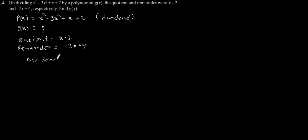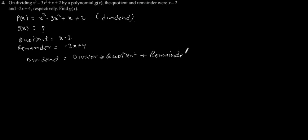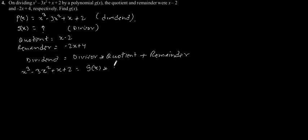Now using the formula: dividend equals divisor into quotient plus remainder. So x³ minus 3x² plus x plus 2 equals g of x, our divisor, multiplied by the quotient x minus 2, plus the remainder minus 2x plus 4.